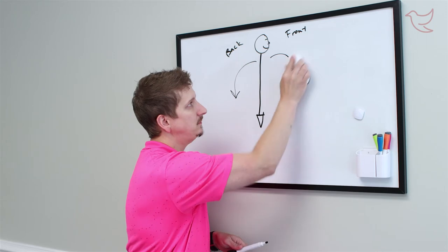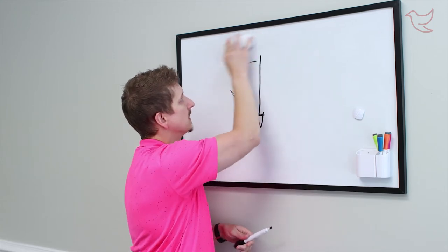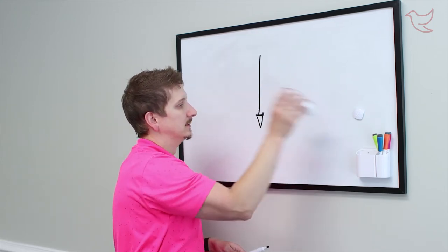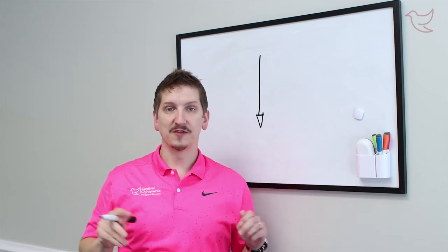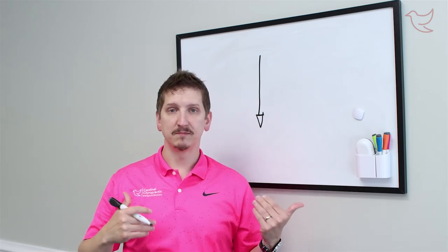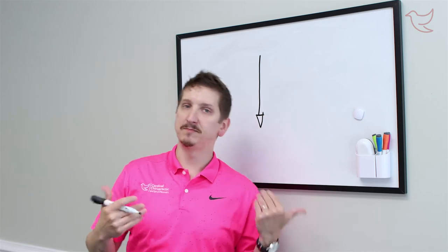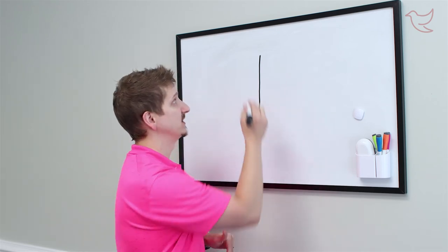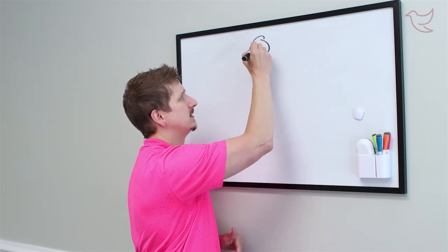So next, let us focus on bending side to side. That is called lateral flexion. Bending to your right would be right lateral flexion. Bending to your left would be left lateral flexion. So let's do a gorgeous human being again.